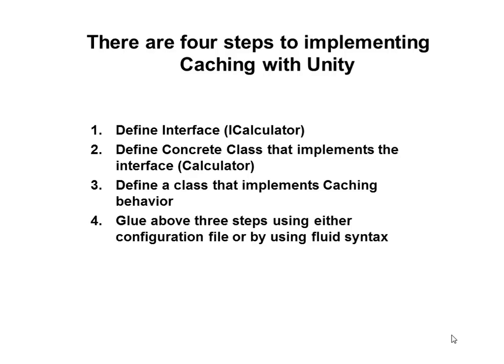There are four steps to implementing caching with Unity. Step one: define an interface — in our case we are going to define an interface called iCalculator. Step two: define a concrete class that implements the interface iCalculator — we will define a concrete class called Calculator. Step three: define a class that implements caching behavior. Step four: glue all above steps using either a configuration file or fluid syntax. We are going to use fluid syntax in this example.